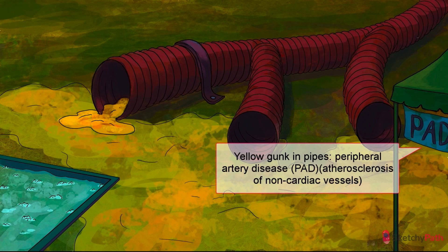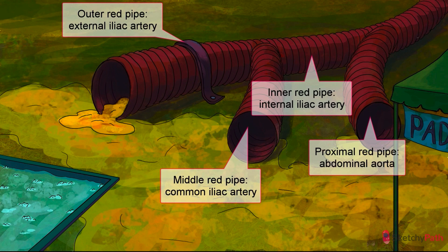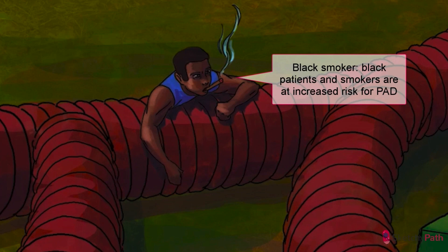Peripheral arterial disease, or PAD, is technically defined as atherosclerosis of the non-cardiac vessels, including the distal aorta, which we tried to recreate here. That tunnel way in the back is the end of the abdominal aorta, which then branches between the common iliac arteries before turning into the internal and external iliac arteries in the foreground. PAD affects over 200 million people around the world, especially in less developed regions in Southeast Asia and the Western Pacific. In the US, PAD is more common in African Americans than Caucasians, and risk increases proportionally with age.